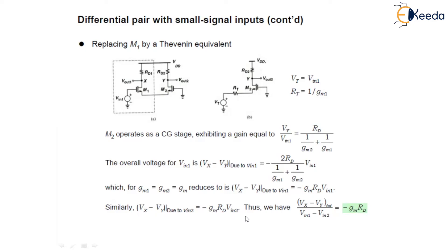Now, we can add both the sides and we get Vx minus Vy total upon Vin1 minus Vin2 equals minus GmRd, which is the same result we got previously during the large signal analysis.